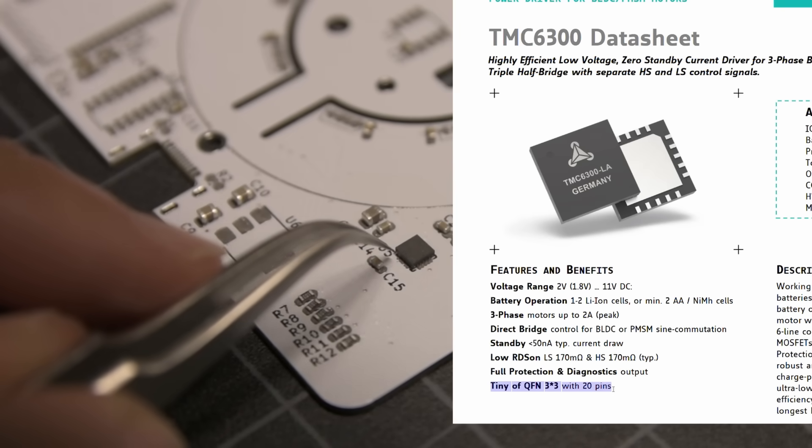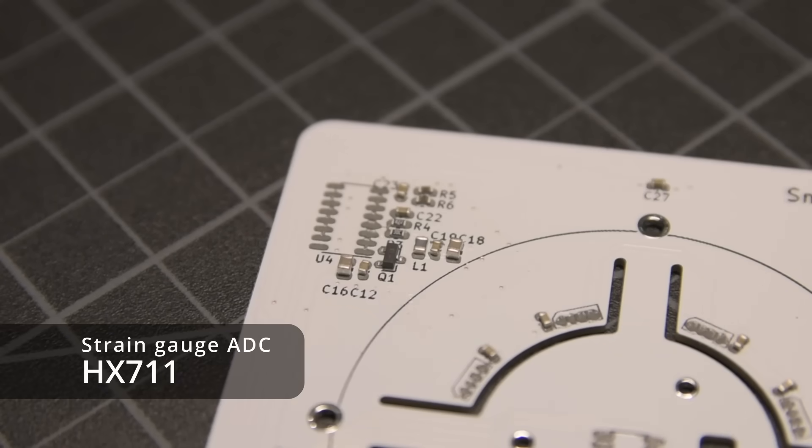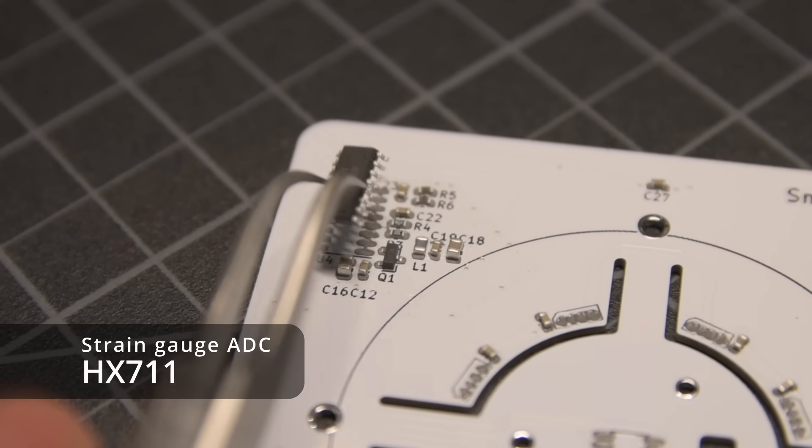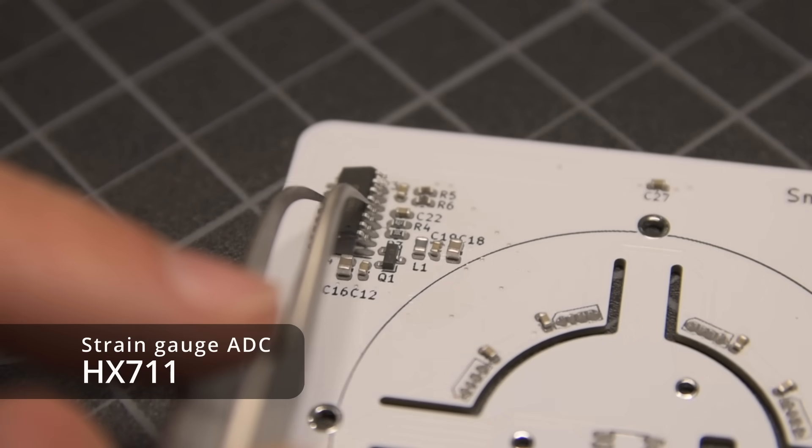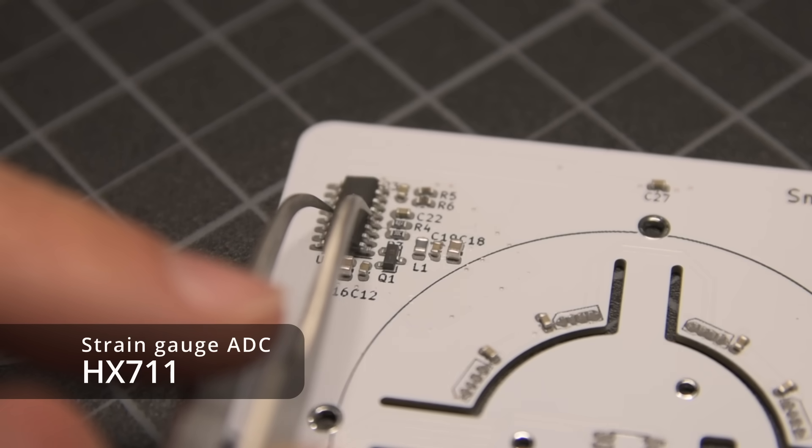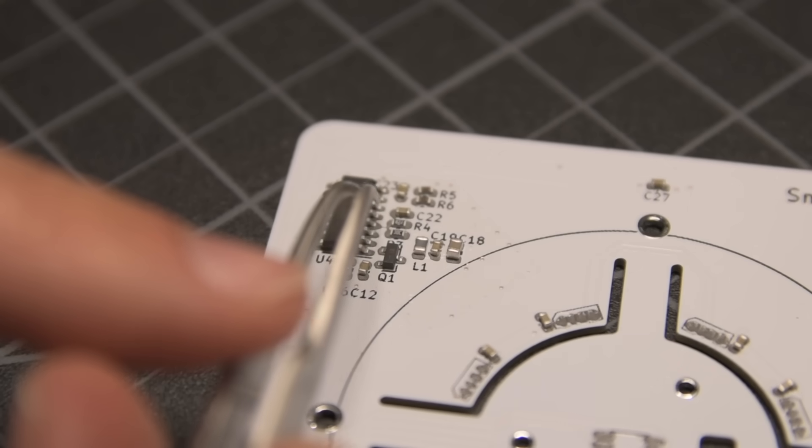In the opposite corner, I'm installing a high-resolution analog-to-digital converter, which gets paired with some strain gauge sensors that measure how much the PCB flexes. Yep, you heard that right, this PCB can measure its own mechanical deformation. Weird flex, but okay.